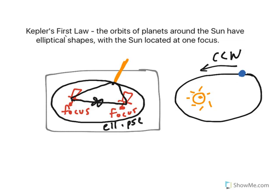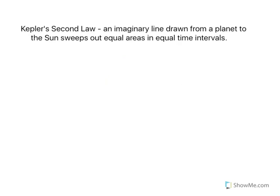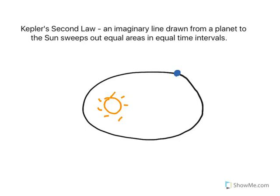Let's look at Kepler's second law. Kepler's second law says that an imaginary line drawn from a planet to the sun sweeps out equal areas in equal times. We have a planet like the earth orbiting counterclockwise around the sun. The sun is located at one focus point and the shape of the orbit is an ellipse. The first part: an imaginary line drawn from a planet to the sun.